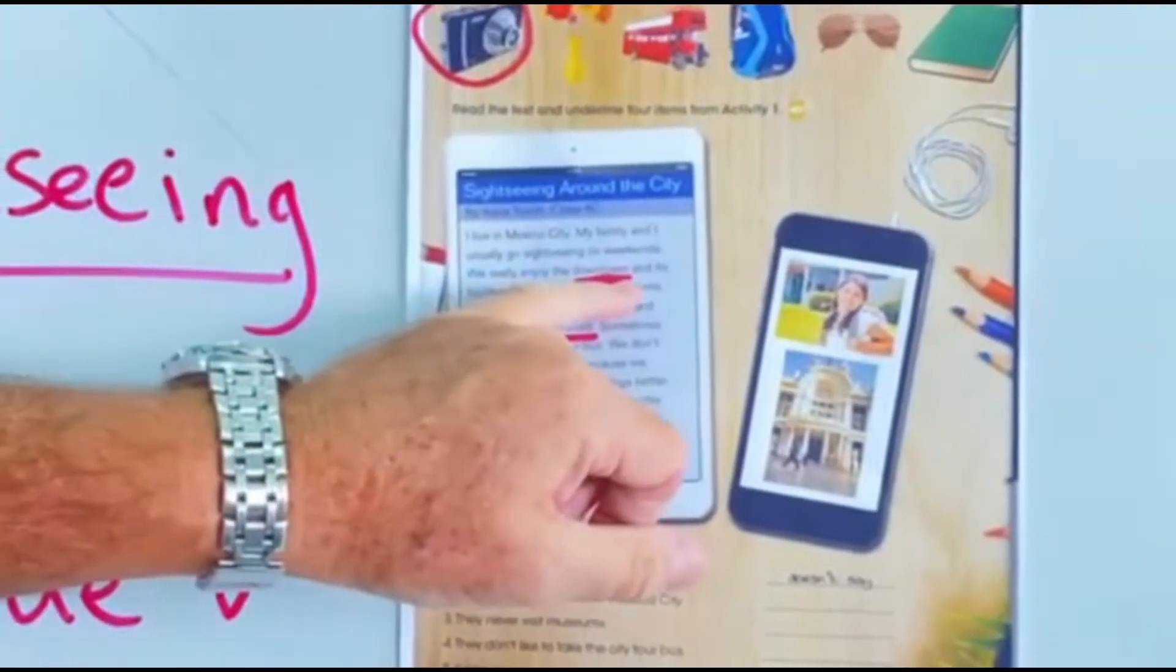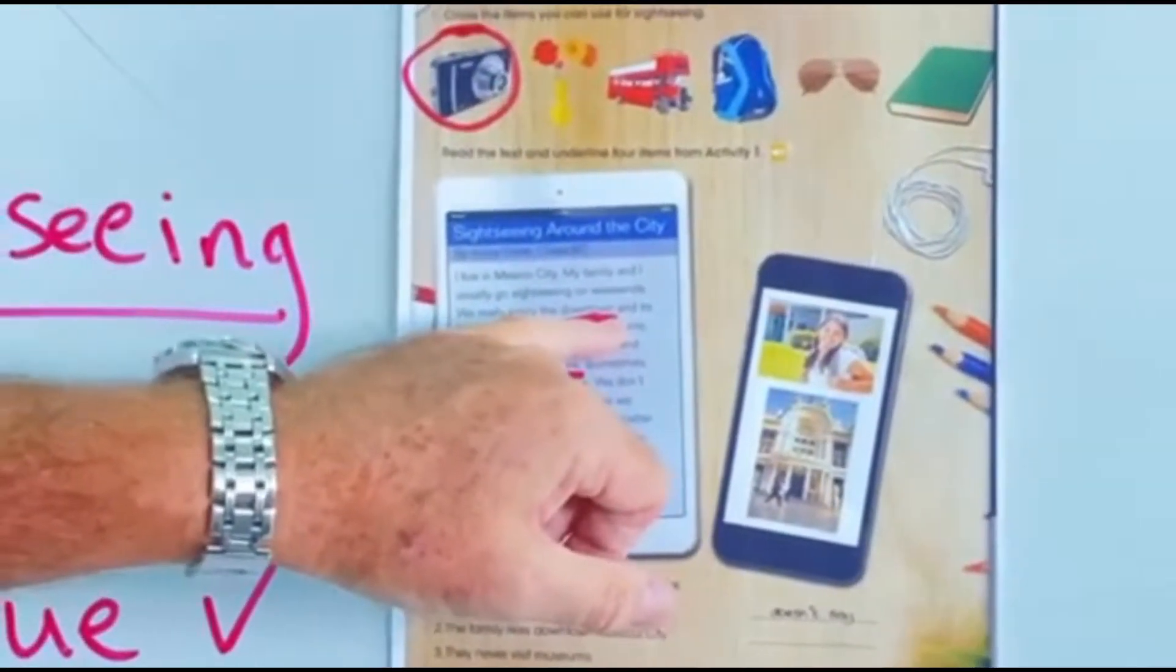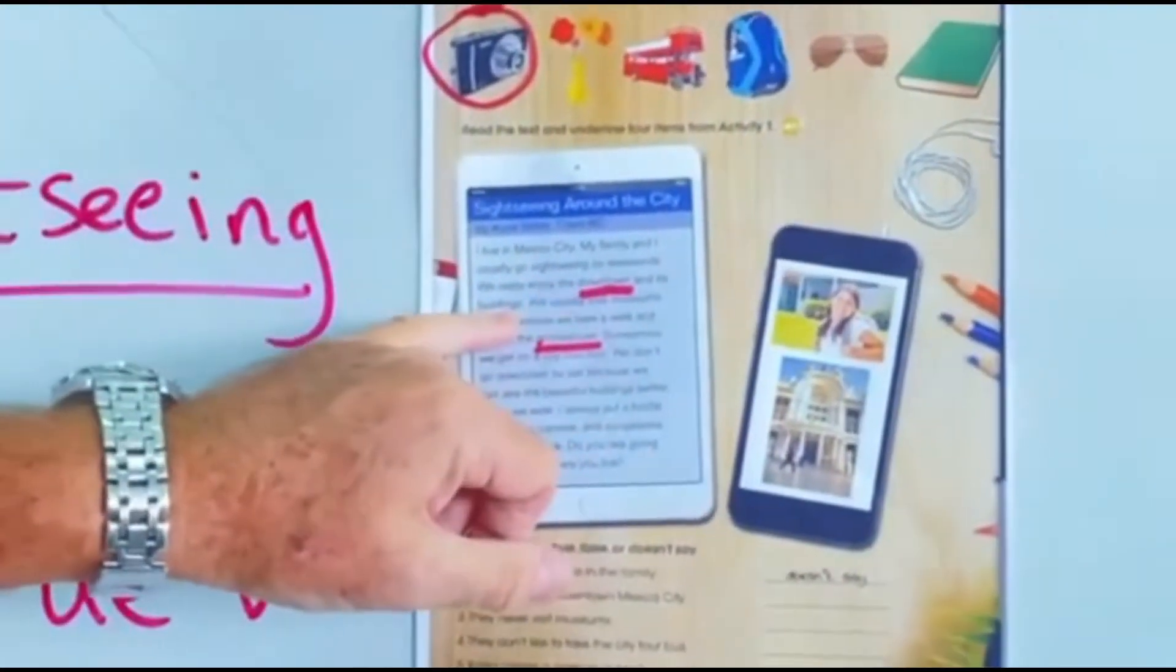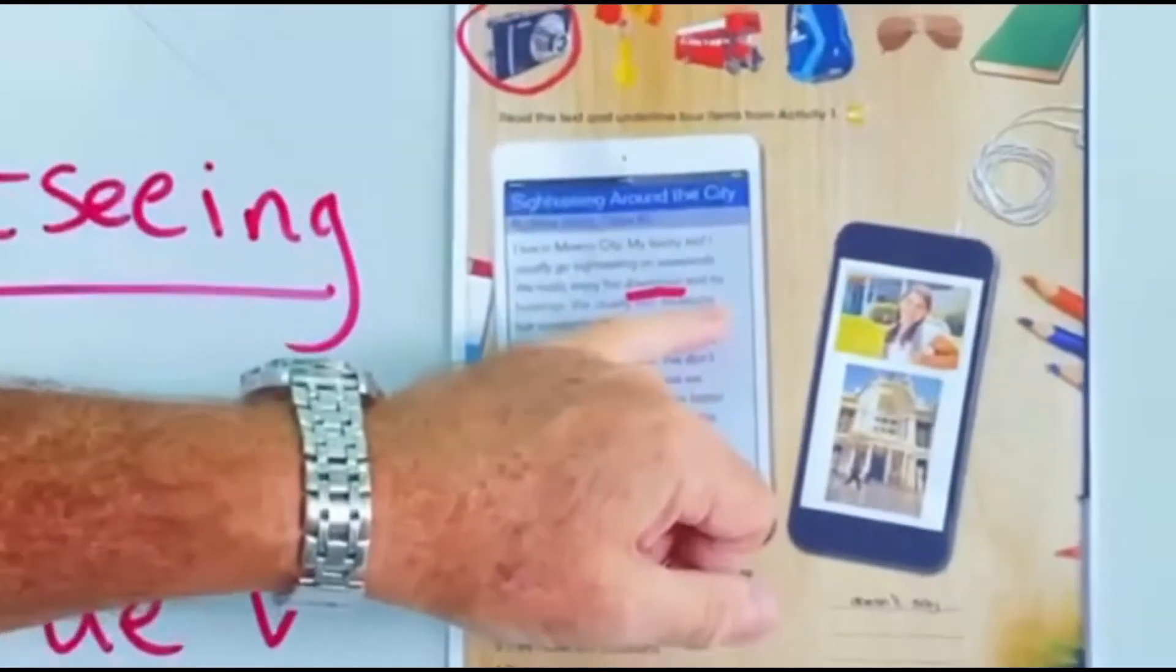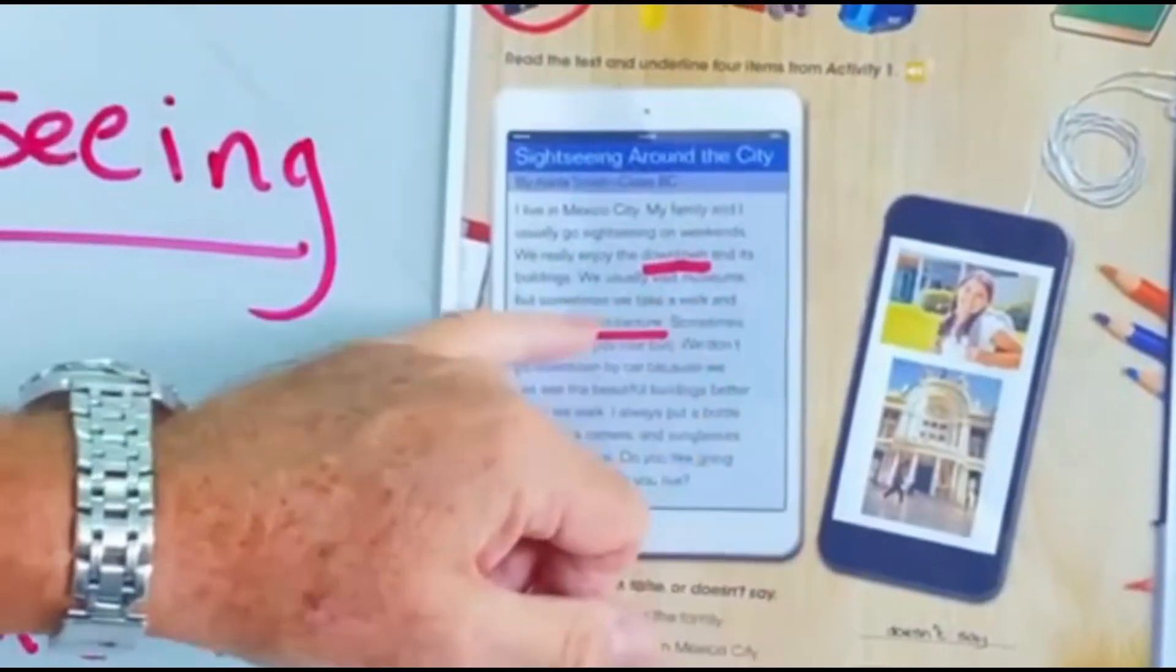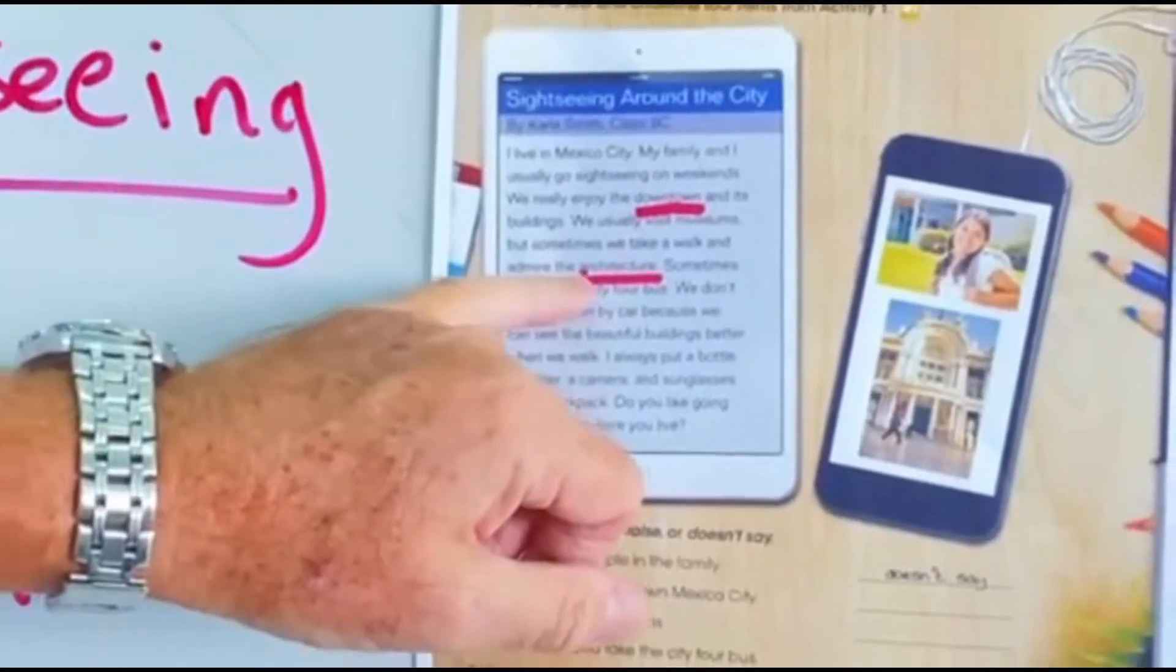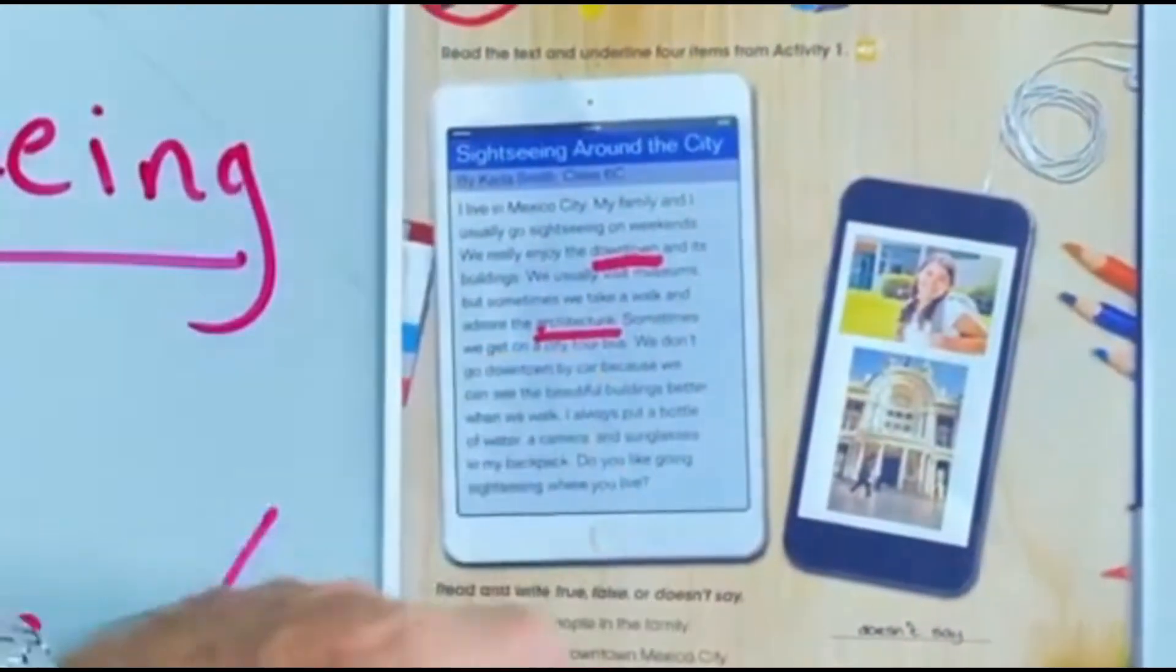She says I live in Mexico City. My family and I usually go sightseeing on the weekends, Saturday, Sunday. We really enjoy the downtown. Downtown is the middle of the city or middle of the town and its buildings. We usually visit museums, but sometimes we take a walk and we admire, look at the architecture. Architecture means all the buildings that are there.